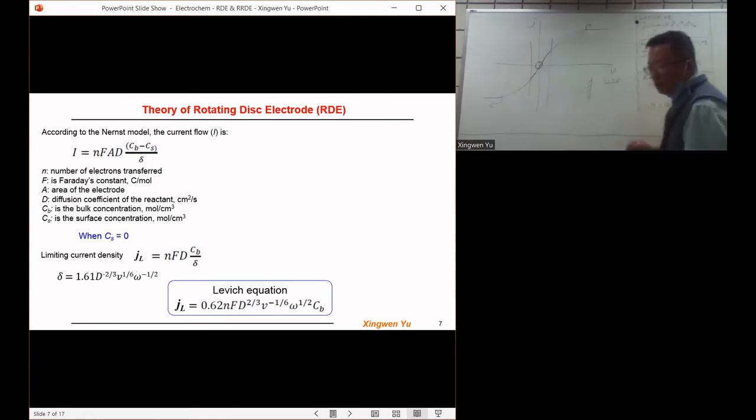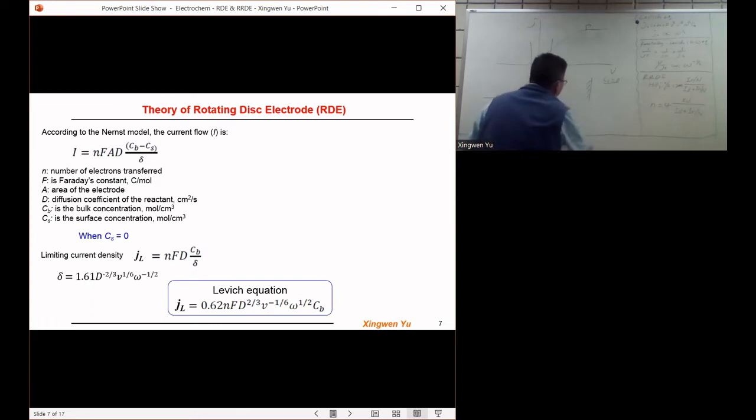In another case, we usually use the current density rather than the absolute current to describe the electrode kinetic reaction. Current density, we usually use the letter j, and the current we use the letter i. Whereas the current j is the current density, i over A, the surface area of the electrode, will be j.